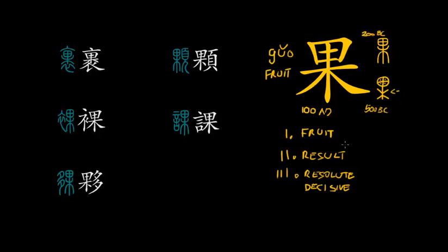The character can also be found in expressions like 如果 (rúguǒ), meaning if, and 果然 (guǒrán), which means something like as expected or after all. For example, 她果然做了 — meaning she really did it, as expected. So much for the meanings of the character 果.